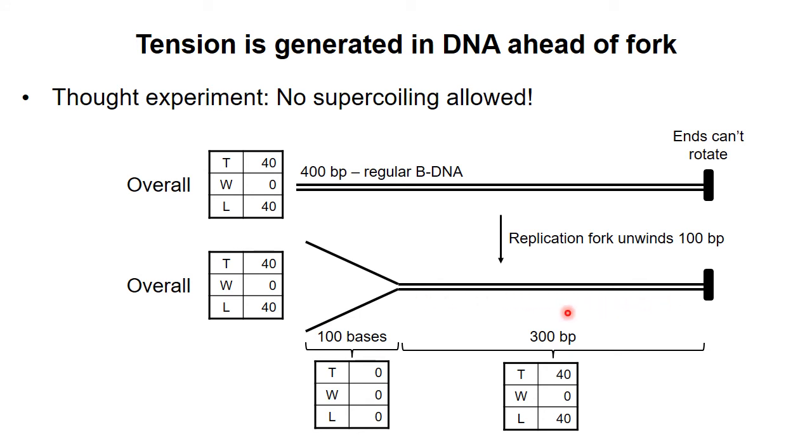But linking number must equal 40, so twist must also equal 40. This section of DNA is therefore overwound, because 300 base pairs are twisted around each other 40 times, when they would prefer 10 base pairs per turn.